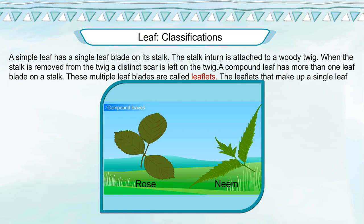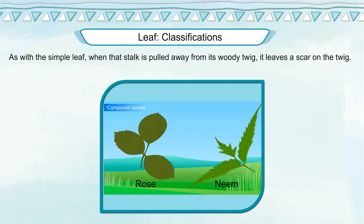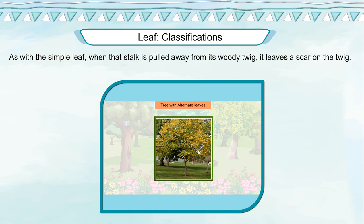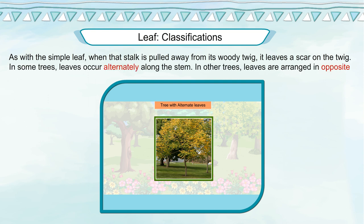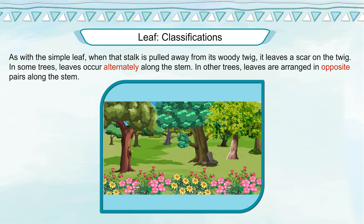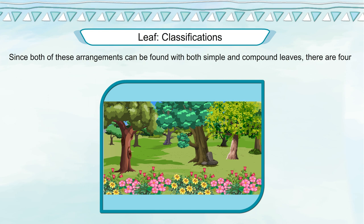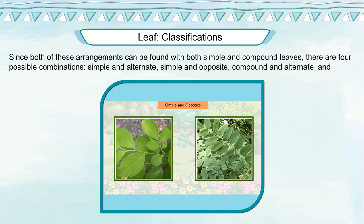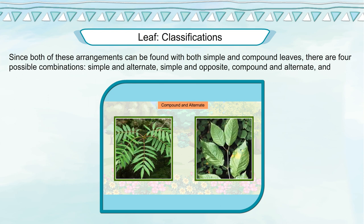A compound leaf has more than one leaf blade on a stalk. These multiple leaf blades are called leaflets. The leaflets that make up a single leaf are attached to a single stalk, and when that stalk is pulled away from its woody twig, it also leaves a scar. In some trees, leaves occur alternately along the stem; in other trees, leaves are arranged in opposite pairs along the stem.